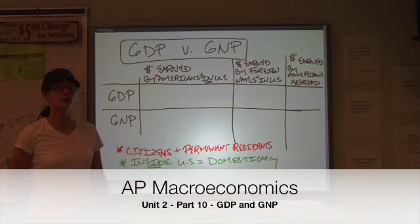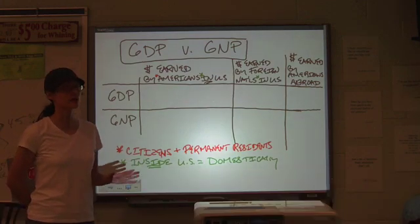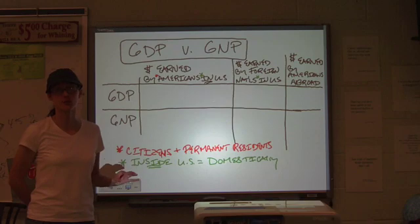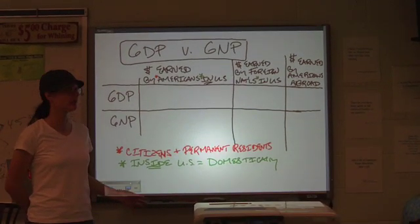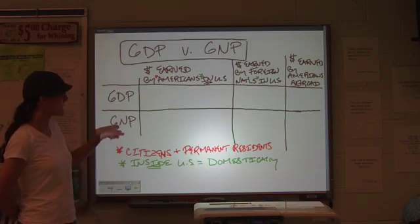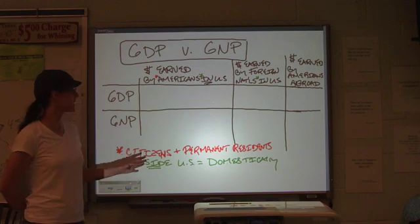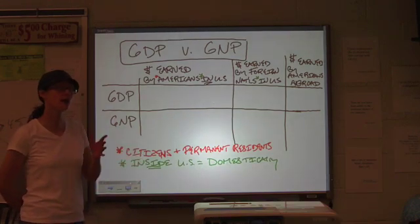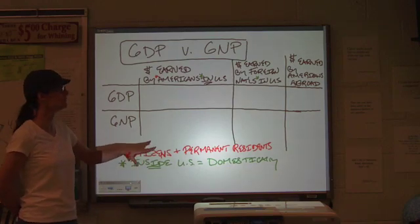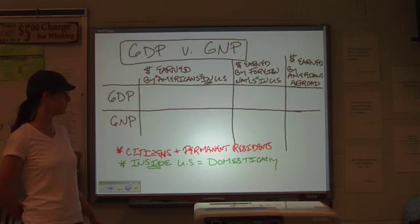One of the things that we were getting really caught up on in class the other day is the difference between GDP and GNP. Honestly, it's really not as relevant as it used to be. If you're talking about an econ textbook from, say, 15 or 20 years ago, GNP is a calculation that you're much more likely to see. Today, a lot of books will just leave that out completely. But since it's in your textbook and you had some questions about it, I thought I'd go ahead and give you just a little quick cheat sheet demonstration of what's included and what's not.